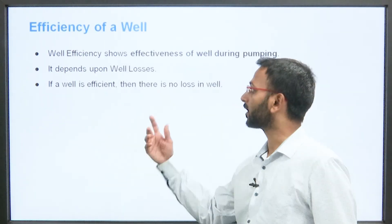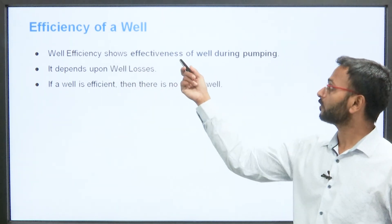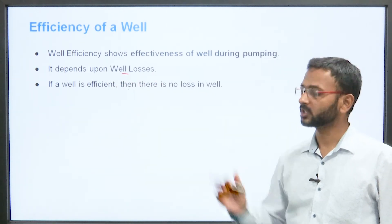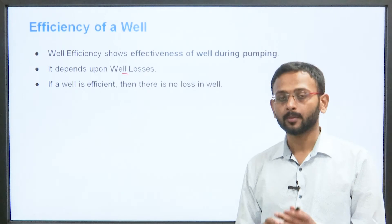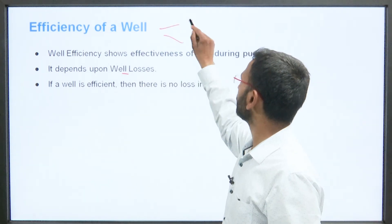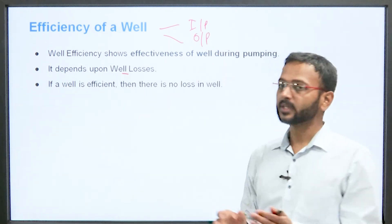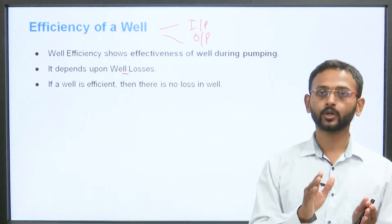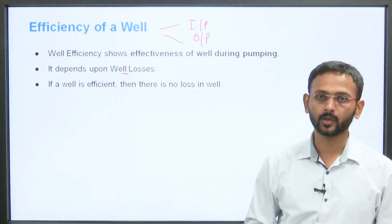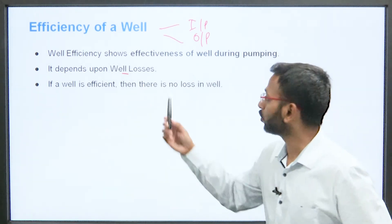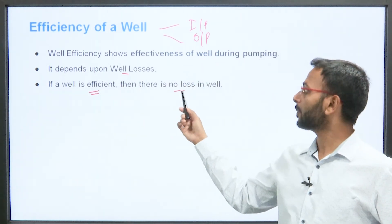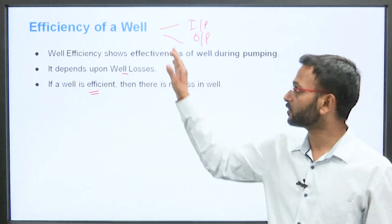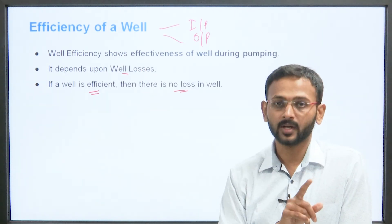Well efficiency shows the effectiveness of the well during pumping. It depends upon the well losses. If a well is efficient, there is no loss. When we talk about efficiency, two things come: input and output. Jitna aapne input diya, utna hi aapko output mila — that is 100% efficiency. If input is 100 units and output is 90 units, that is 90% efficiency. Yadi well fully efficient hai, toh koi losses dekhne ko nahi milte — efficiency depends on well losses.